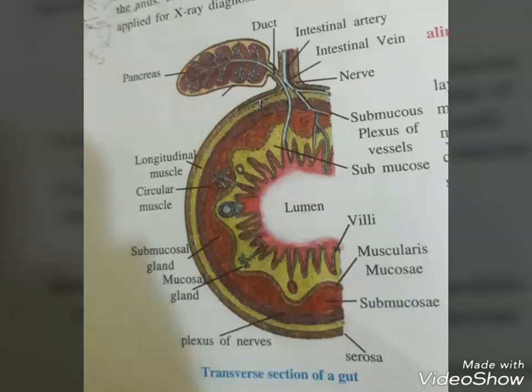The mucosal epithelium has goblet cells which secrete mucus that helps in lubrication. Mucosa also forms glands in the stomach called gastric glands, and crypts in between the bases of villi in the intestine. All four layers show modifications in different parts of the alimentary canal.